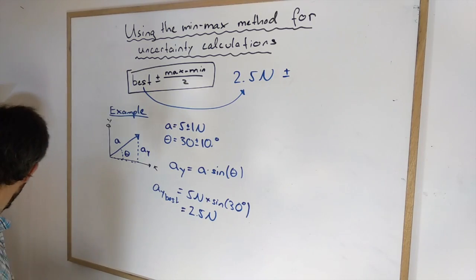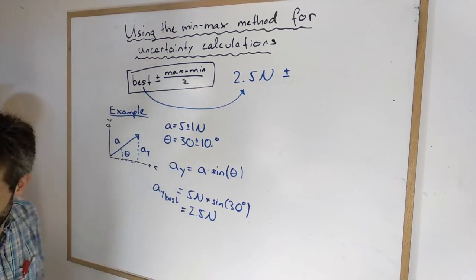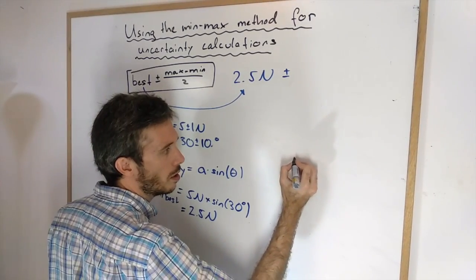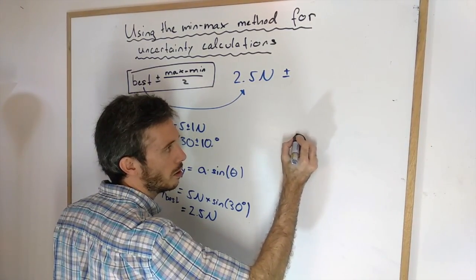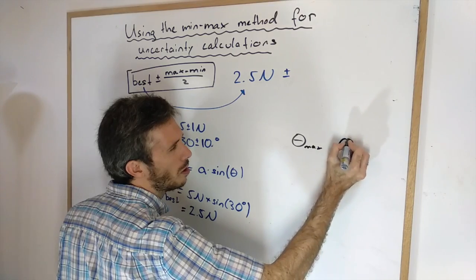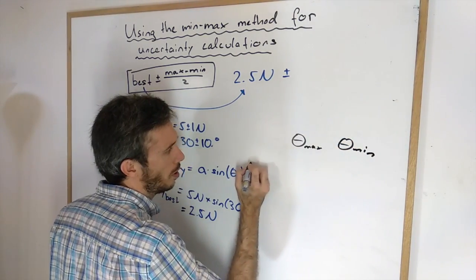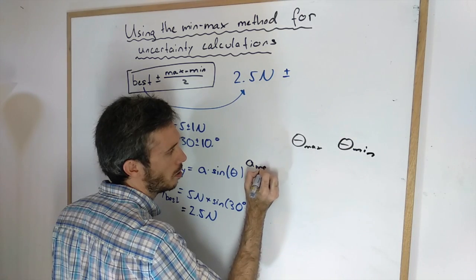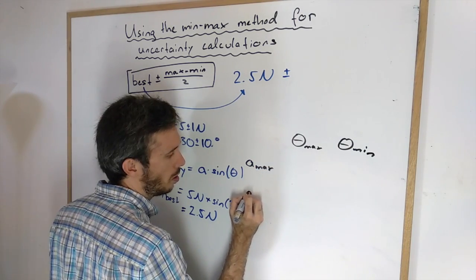So what do I do? I look at all possible combinations. So in my case what is the biggest angle? What is the smallest angle? What is the biggest amplitude? And what is the smallest amplitude?